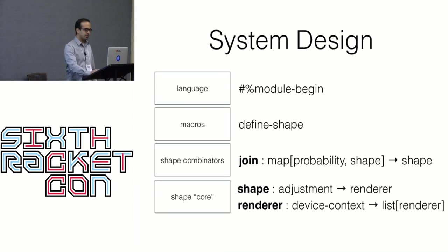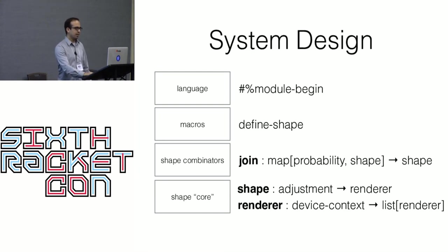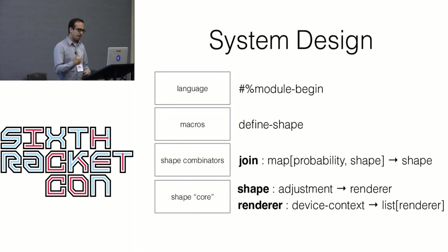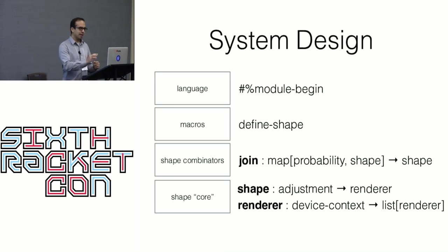On top of that I defined some combinators — like a drawing combinator that defines the probability of picking a specific shape and rendering it. Then on top of that, I used the macro system of Racket to define the shape syntax, so I have a special kind of syntax for using that. Finally, something I'm still working on is the actual language layer, which sets up the device context to output a PNG, so I can define exactly the declaration of the work of art and get it run.